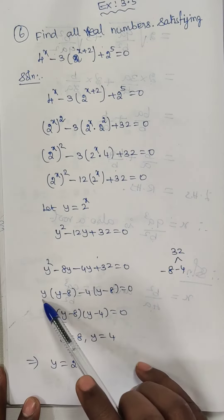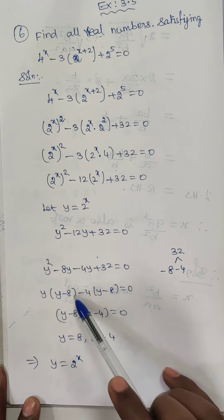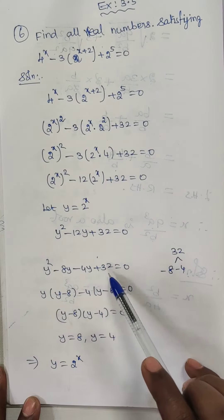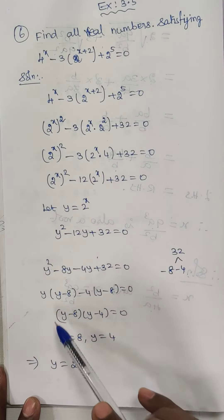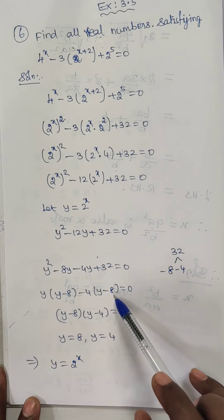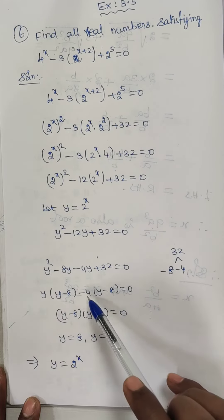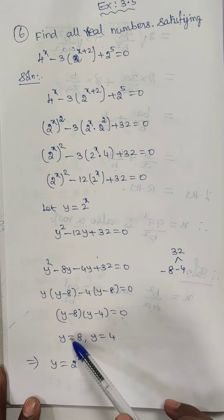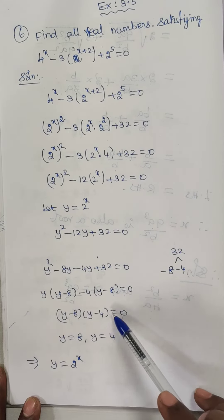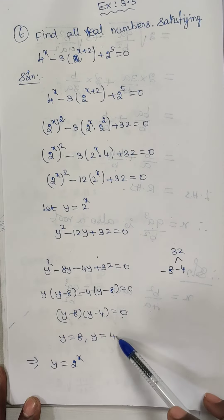Here I am going to take y outside, the remaining term is y minus 8. Then I am going to take minus 4 outside, the remaining term is y minus 8. So we have y minus 8 and y minus 8 as the common term. Taking it outside, the remaining term is y minus 4, equal to 0. So y minus 8 equals 0 or y minus 4 equals 0, giving y equal to 8 and y equal to 4.